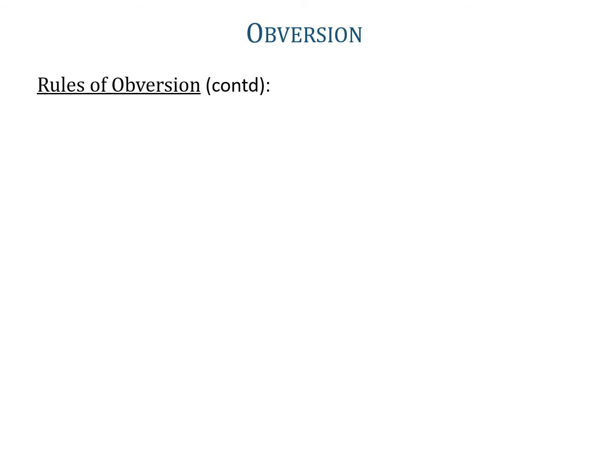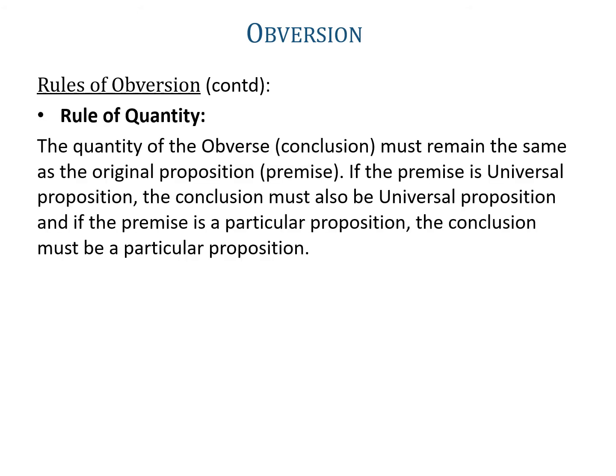The second rule of obversion is the rule of quantity. The quantity of the obverse, that is the conclusion, must remain the same as the original proposition, that is the premise. If the premise is a universal proposition, then the conclusion must also be a universal proposition. And if the premise is a particular proposition, then the conclusion must also be a particular proposition.